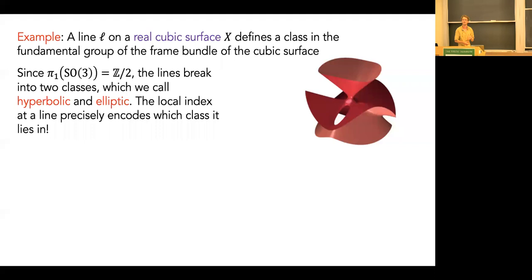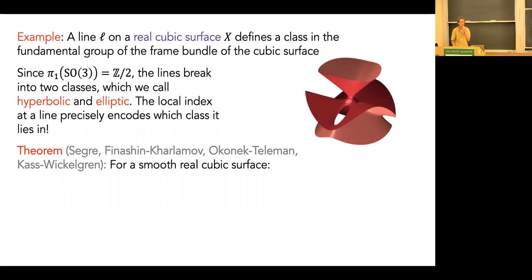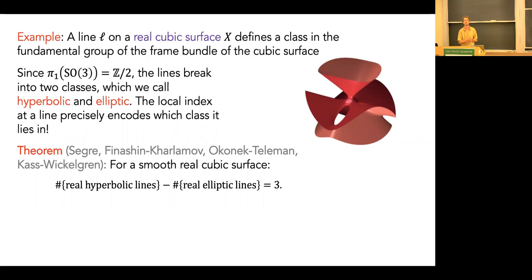There's a result going back to Segre in the 1940s, pointed out by Finashin–Kharlamov and Okonek–Teleman, with the most recent motivic incarnation due to Kass and Wickelgren: for a smooth real cubic, the number of real hyperbolic lines minus the number of real elliptic lines equals three. Motivically this comes from a matrix with 15 ones and 12 minus ones on the diagonal — rank 27, signature 3. This tells us, for example, that you always have at least three lines on a real cubic.